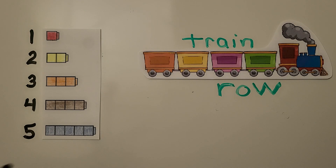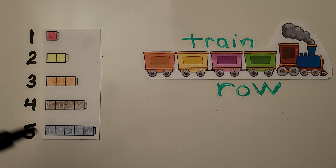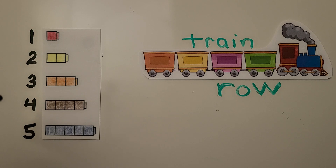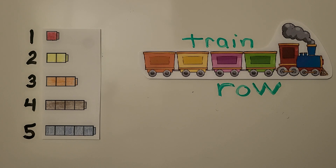Here we have some cubes and they're going off to the side — they're in rows. We have one, two, three, four, five. A row goes across to the side like a train, and each row has a different number of cubes. The numbers are in counting order with the shortest row first up here.